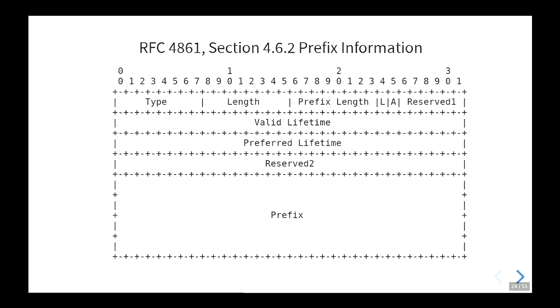The prefix option looks like this: it starts with the option header where the length is encoded — always the same length since the full address is always encoded regardless of the prefix length, with the remainder zeroed. There are two flags: one indicating if the address is on-link, and another — the A flag, the autonomous address configuration flag.